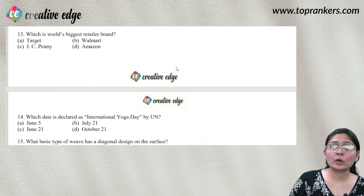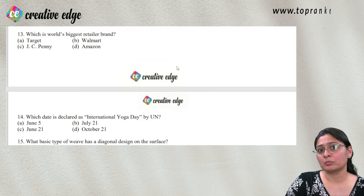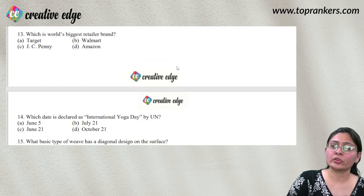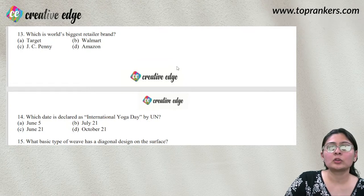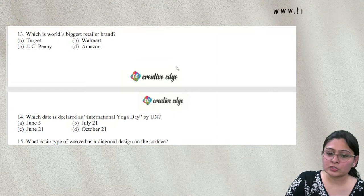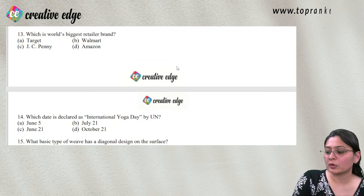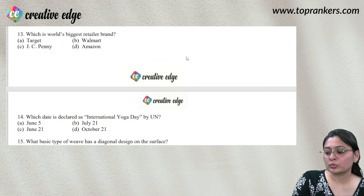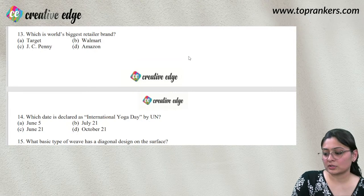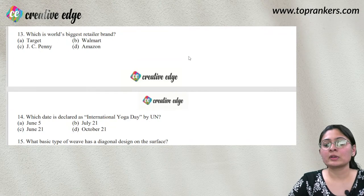The world's biggest retailer brand is Walmart, closely followed by Amazon at second and Alibaba at third. Alibaba is a Chinese online shopping platform founded by Jack Ma.